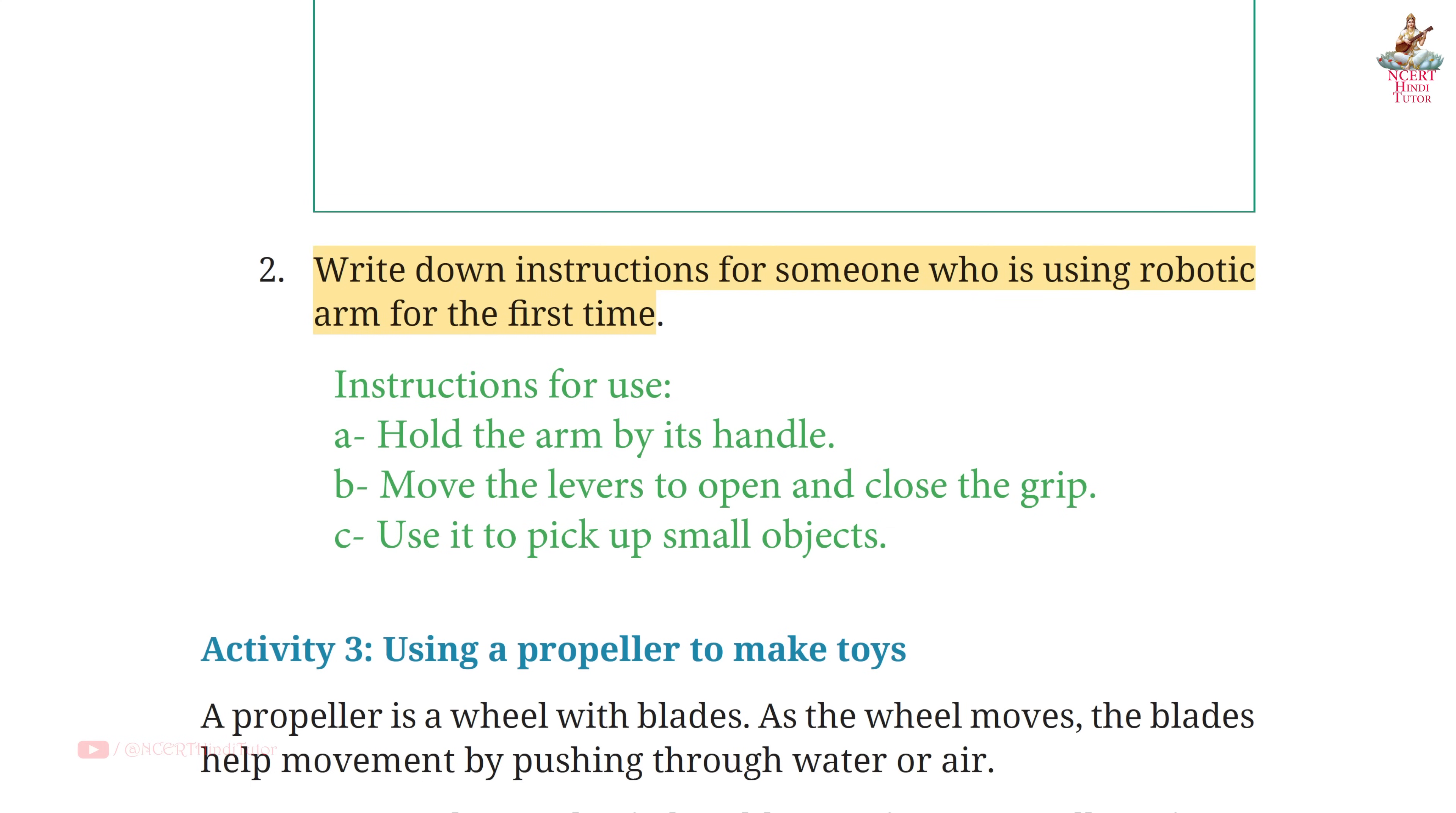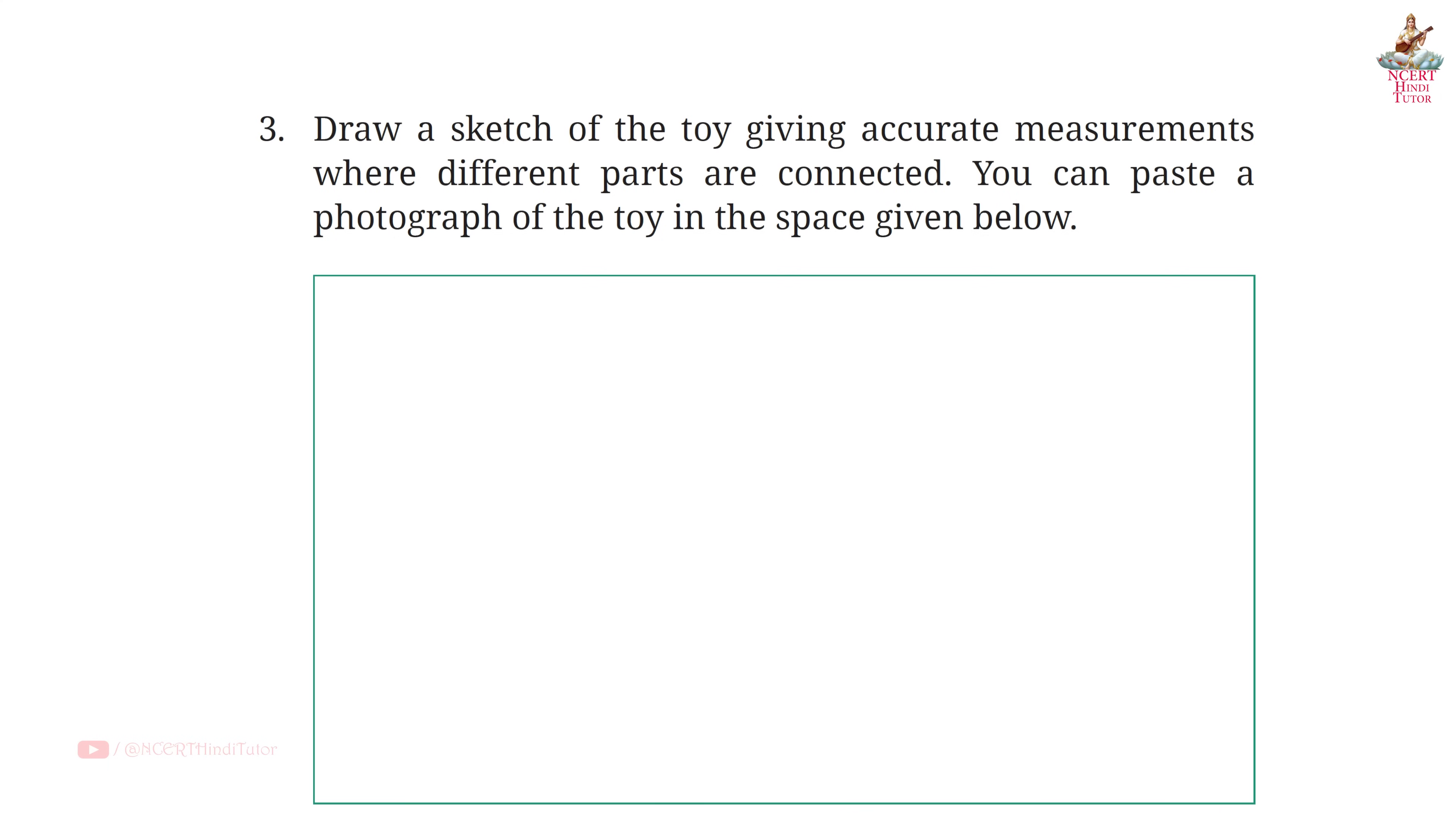Question 2: Write down instructions for someone who is using robotic arm for the first time. Answer, Instructions for use: A) Hold the arm by its handle. B) Move the levers to open and close the grip. C) Use it to pick up small objects.